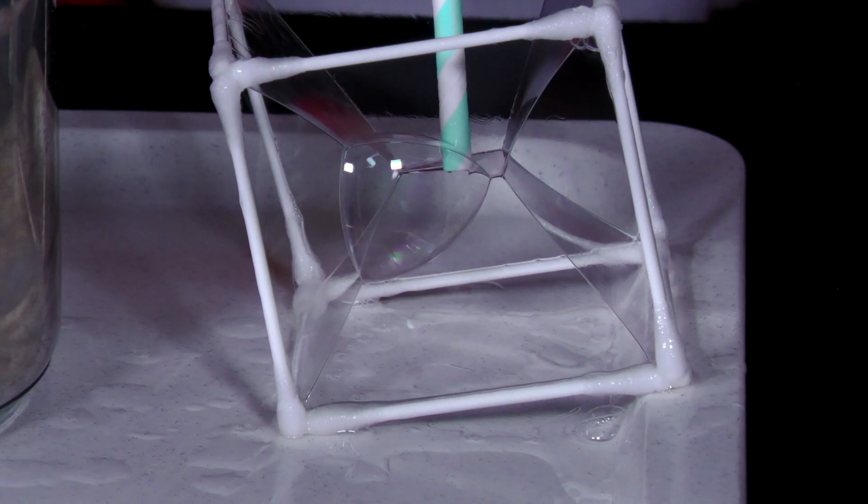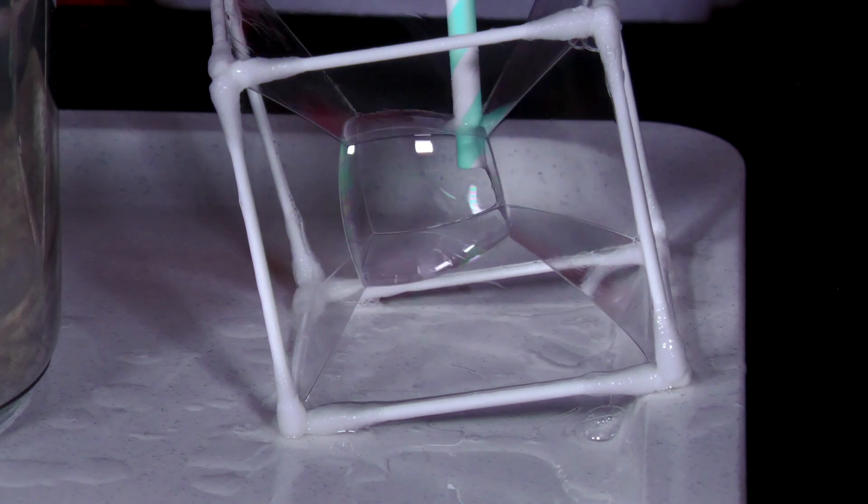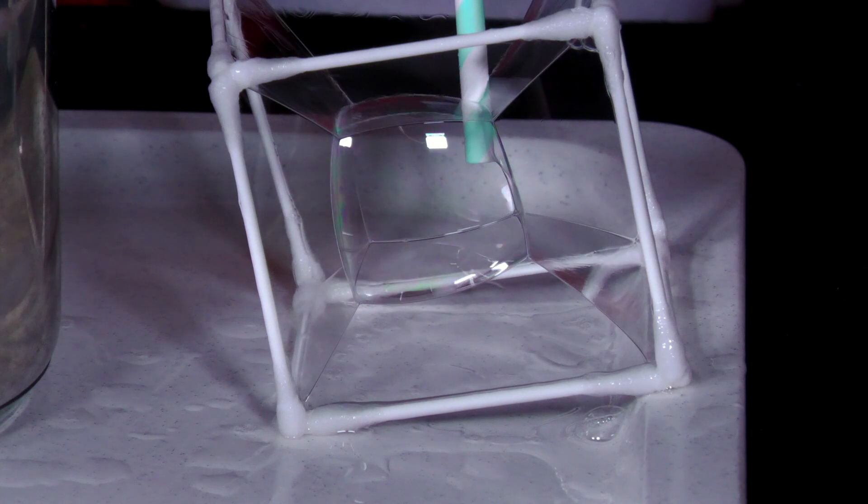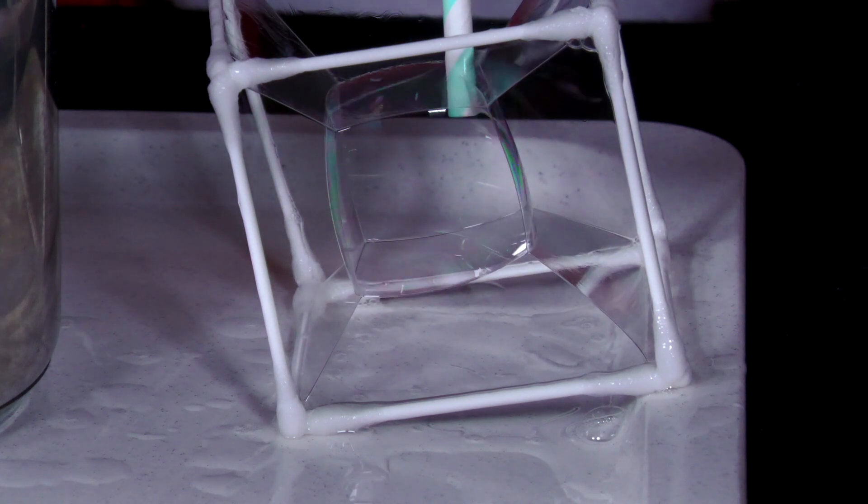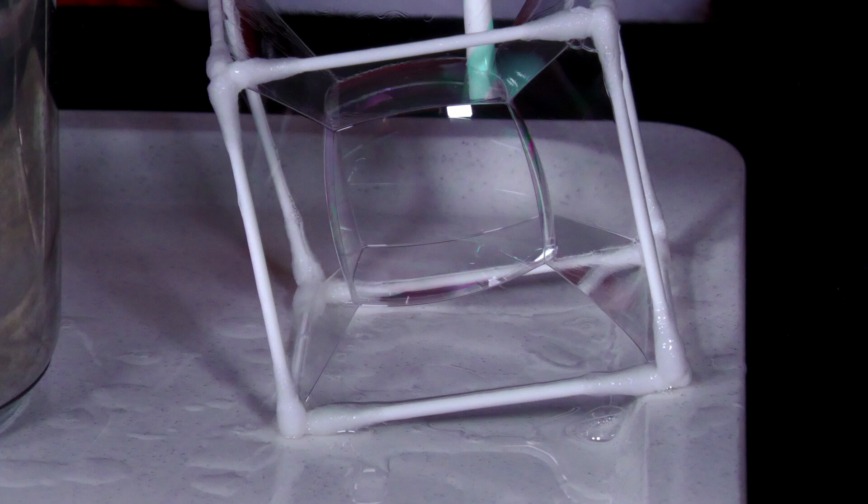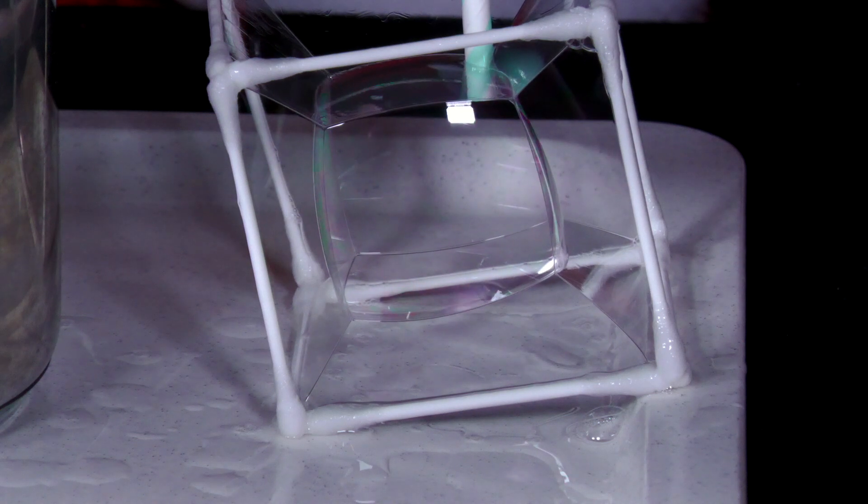The reason for this is that nature minimizes the surface energy and thus the surface area. If the volume of gas is fixed, the sphere is the shape with the smallest surface area.